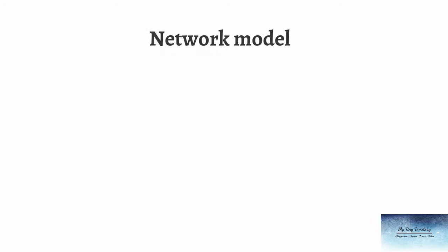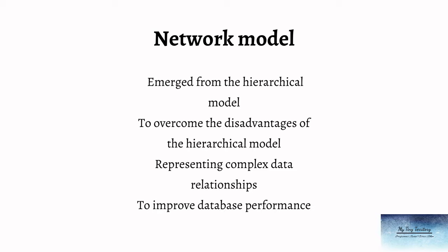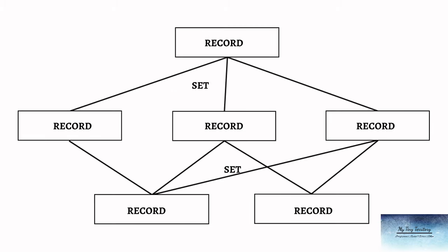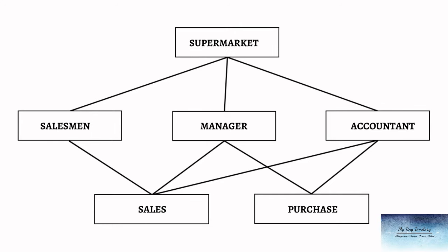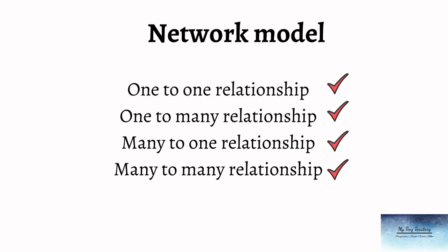Next is the network model. The network model emerged from the hierarchical model to overcome its disadvantages. Thus the network model represented complex data relationships much more effectively than the hierarchical model and improved database performance. The network model organizes data using two fundamental concepts: records and sets. The records contain fields and the sets define one-to-many or many-to-one relationships between records. The network model allows a record to have more than one parent. In this model the data was far more related to each other, and accessing the data was far easier and faster as many-to-one and many-to-many relationships were also established along with one-to-one and one-to-many relationships.